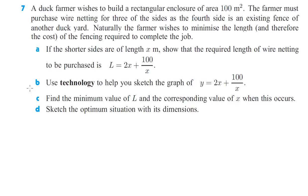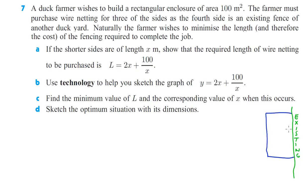Number 7. A duck farmer wishes to build a rectangular enclosure of area 100 square meters. The farmer must purchase wire netting for 3 of the sides, and the 4th side is an existing fence of another duck yard. The farmer wishes to minimize the length — and therefore the cost — of the fencing required. Let's draw a picture. Here is the existing fence in green. The farmer is going to make a fence here, and the shorter sides are of length x.